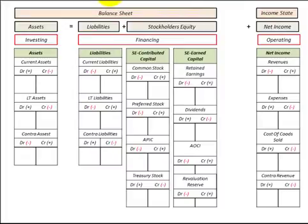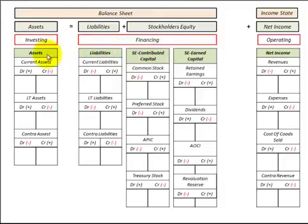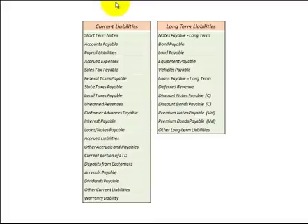Here's another template — same as the other one, only expanded to include all liabilities, which are part of the financing activities of the business, along with the stockholders' equity section showing contributed capital and earned capital. Assets are shown as the investing part of the business — investing activities — and net income represents the operating activities of the business. Again, these templates are very handy when you come to do your homework problems.